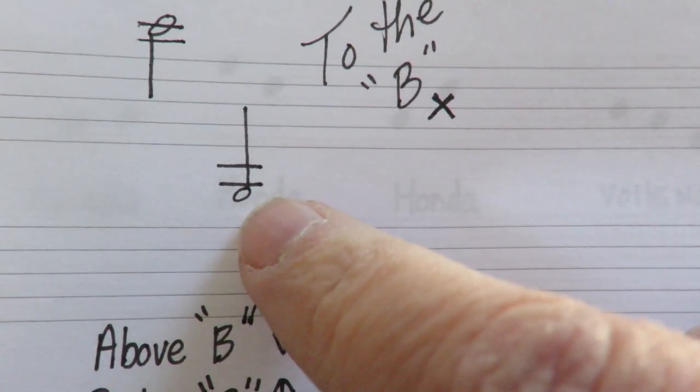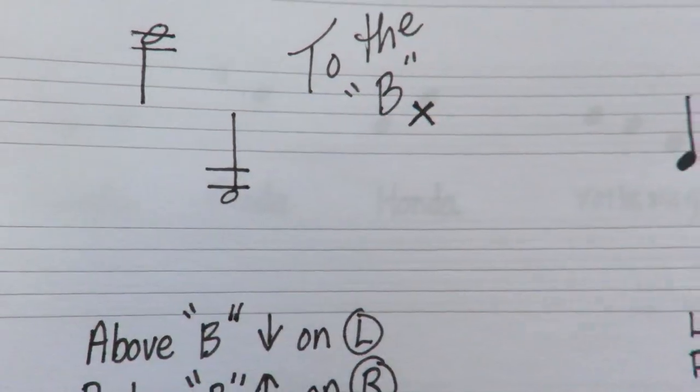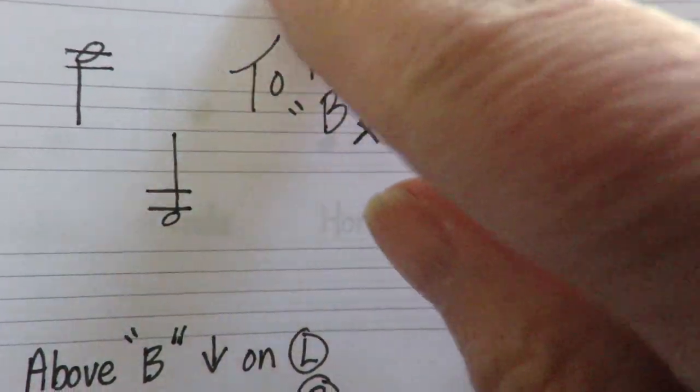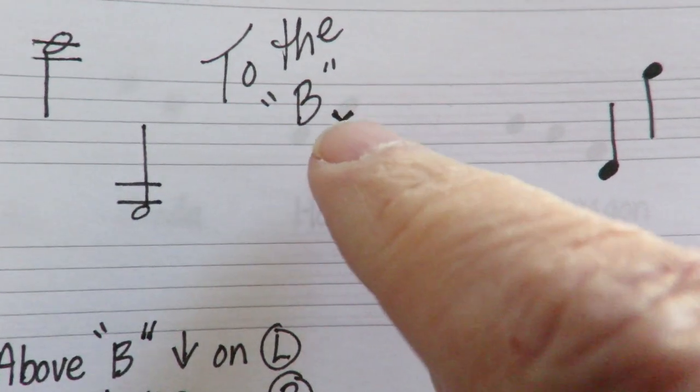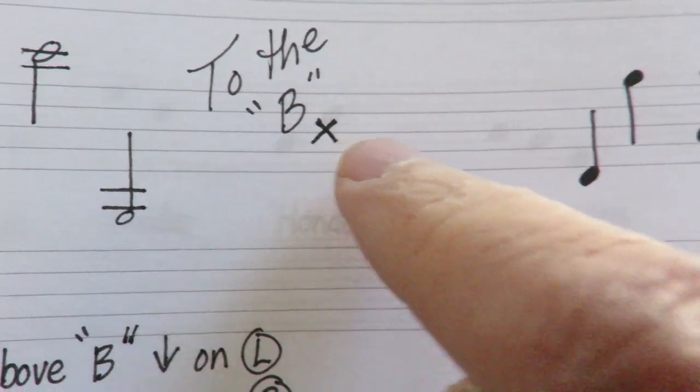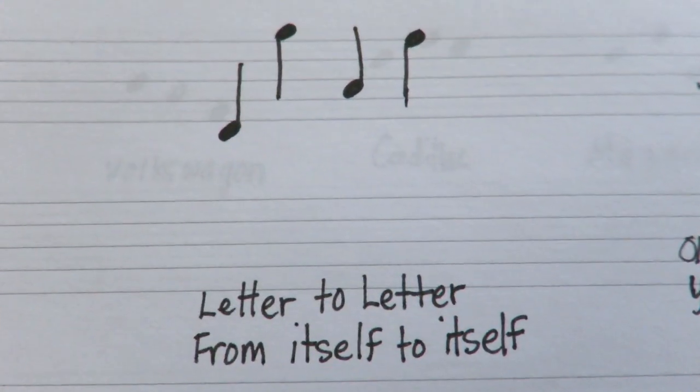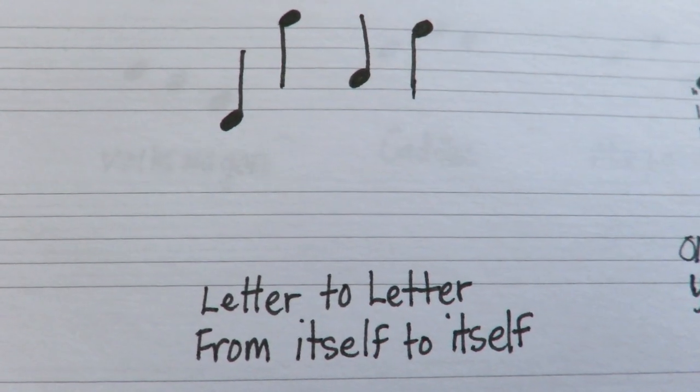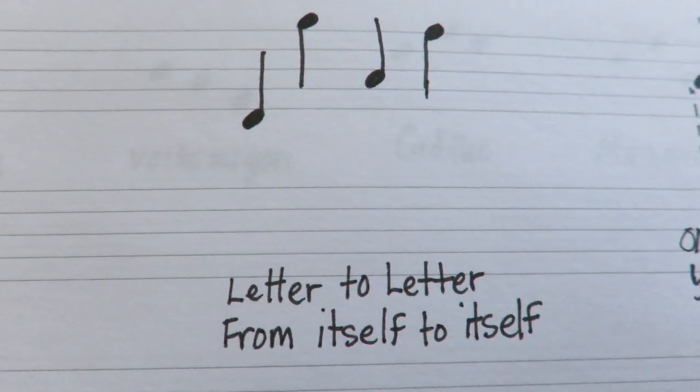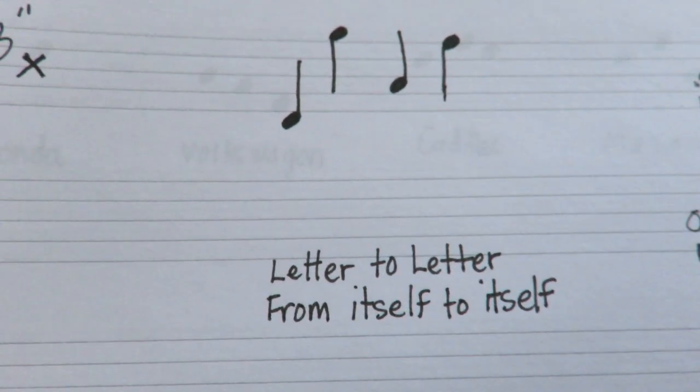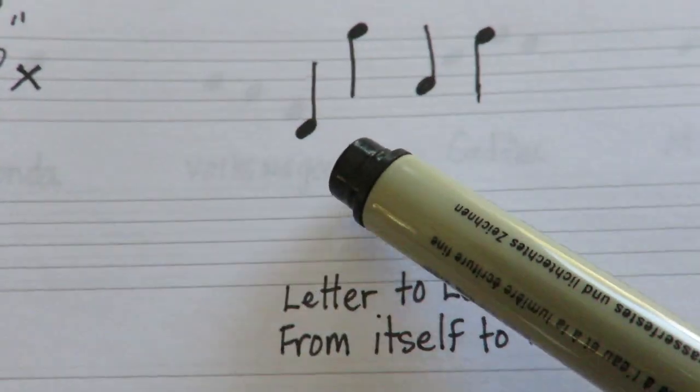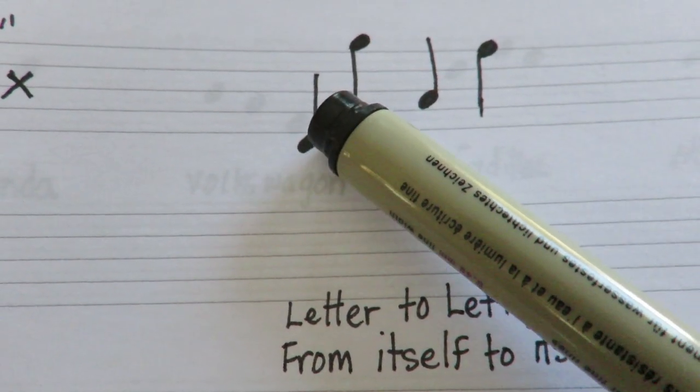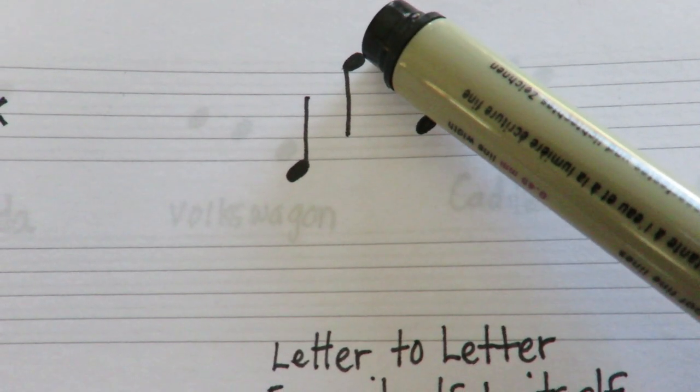This one below the B line, it goes up on the right. And remember all ledger line notes go to the B line. Then we learned how to put our stems on regular notes or notes that are in the staff which include the D that touches the E line and the G that touches the F line.